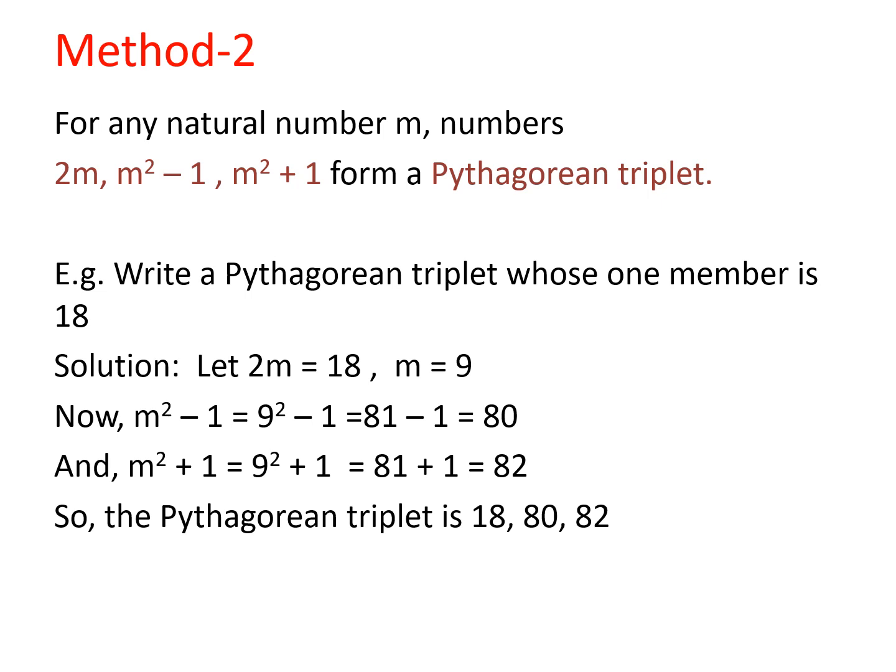Let us learn one more method for finding the triplets. For any natural number m, numbers 2m, m² - 1, m² + 1 form a Pythagorean triplet. Now let us take one question: write a Pythagorean triplet whose one member is given to you as 18.